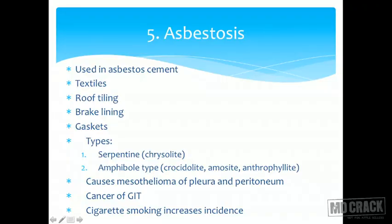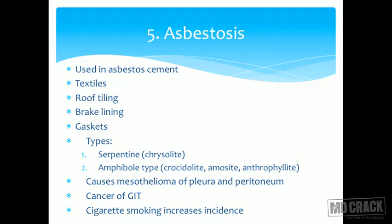Asbestos is notorious for causing serious conditions. Most importantly, it causes mesothelioma — a very rare tumor of the pleura or peritoneum. If you hear mesothelioma, automatically suspect asbestos — the association is that strong. It can also cause lung cancer, stomach cancer, and colon cancer. But mesothelioma is the most specific cancer for asbestosis. There is also a synergistic association with cigarette smoking, but this applies specifically to lung cancer — cigarette smoking is synergistic with asbestos for lung cancer but is NOT synergistic for mesothelioma. Asbestos alone affects mesothelioma; cigarette smoking does not affect mesothelioma risk.